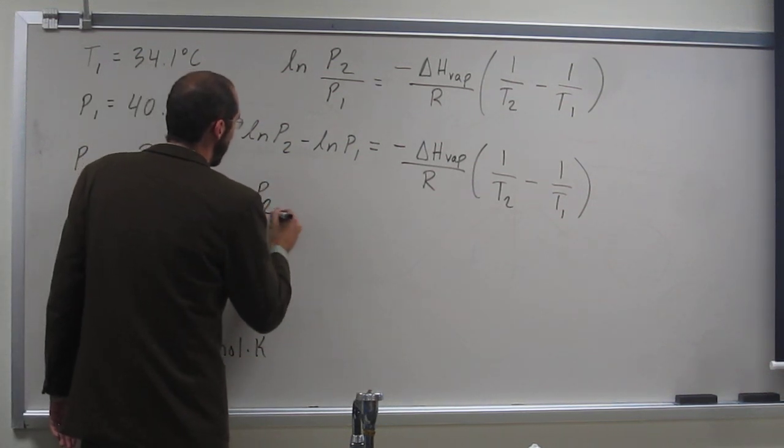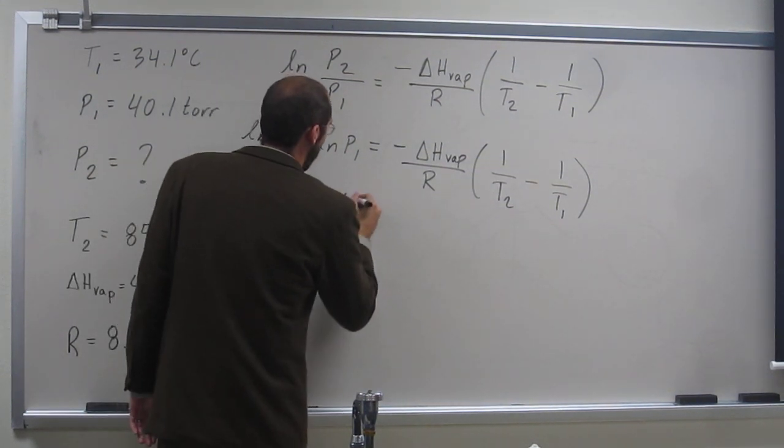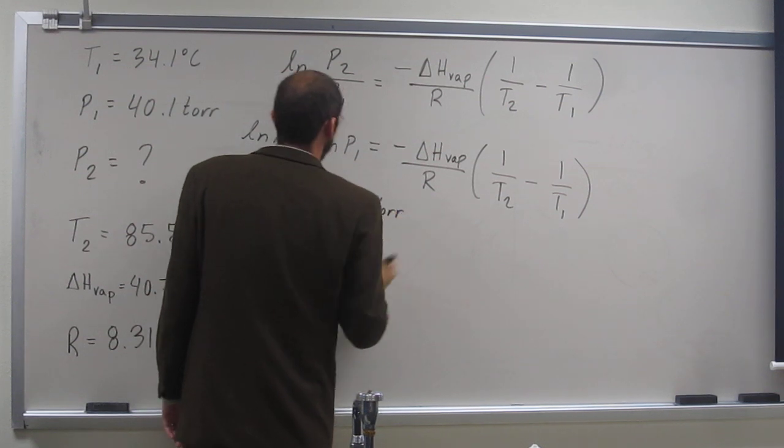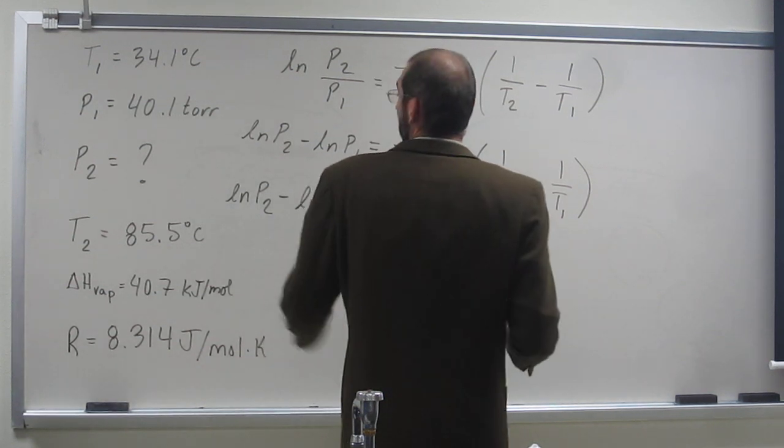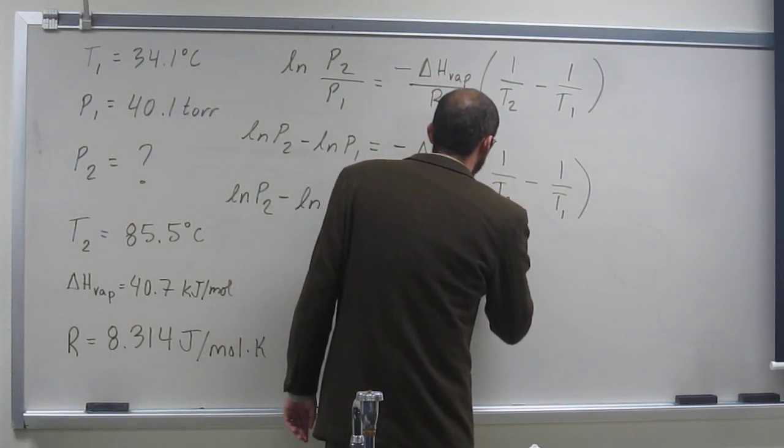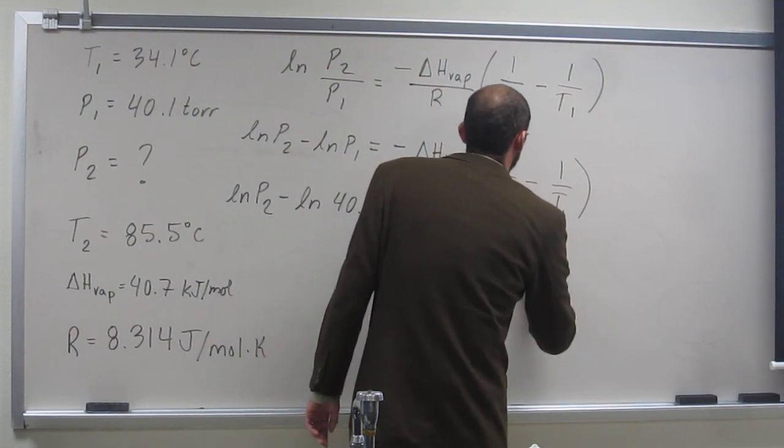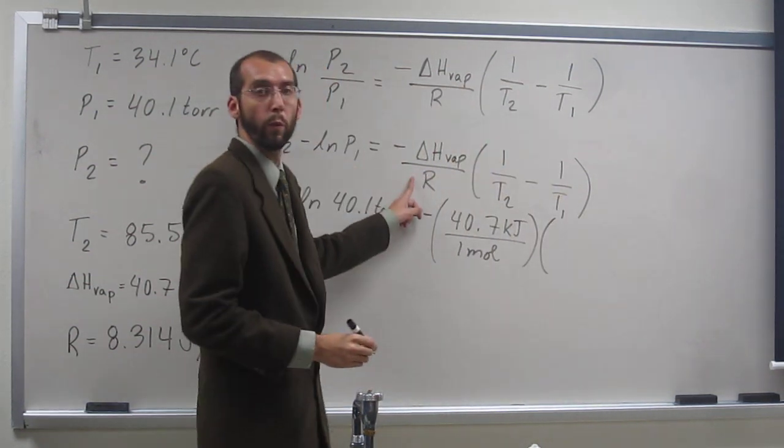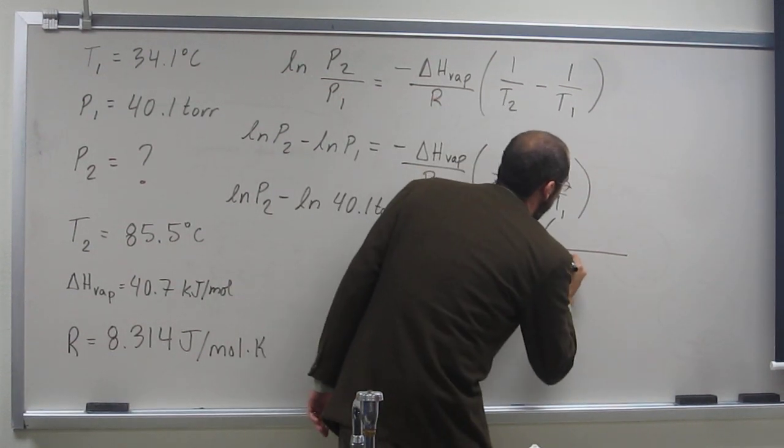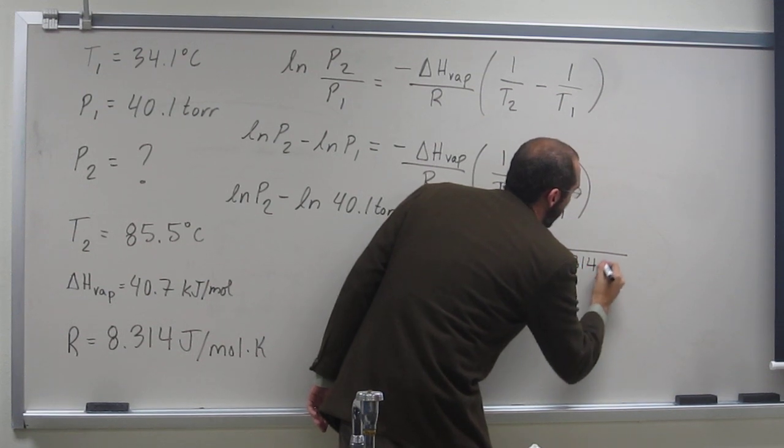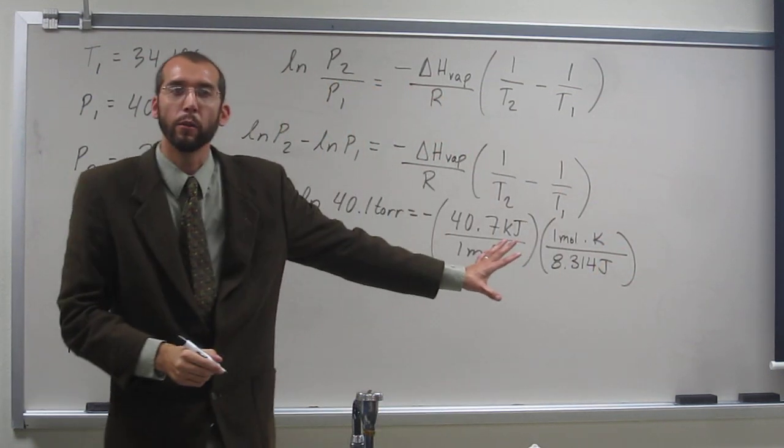So let's just go ahead and do it. We got the Ln of P2, that's what we're looking for, minus the Ln of P1, 40.1 torr, equals negative 40.7 kilojoules per 1 mole. So 1 over R, we're going to multiply that by 1 over R, which would be 8.314 joules per 1 mole Kelvin. Is everybody okay with me doing that?